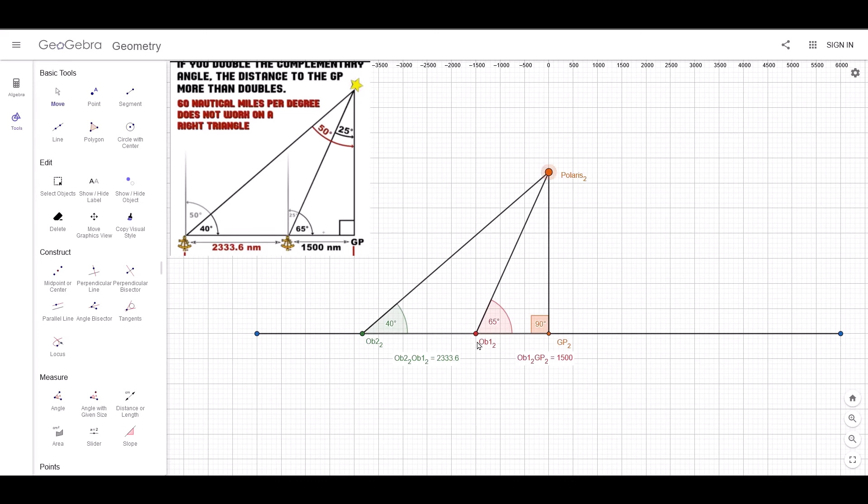The complementary angle for observer 1 is 25. And when you multiply that by 60, you get 1,500. So this is fine. And the complementary angle for observer 2 should be 50. And when you multiply that by 60, that should be 3,000. That should be this distance here to the GP. But when you add these two numbers up, you get a lot more than 3,000. And this is clearly longer than 1,500. So what's going on?